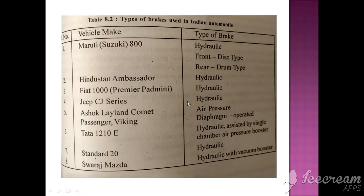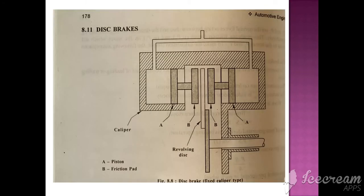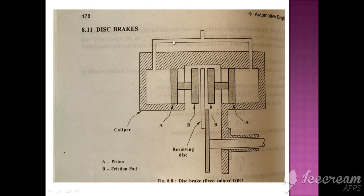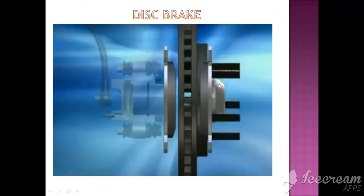Now we will see disc brakes. Here you can see the disc brakes. This is known as the caliper and this is the revolving disc. B is the friction pad. Due to oil pressure coming here, this will press the piston. When the piston moves inside, both of them move inside. You can see the ventilated disc here.